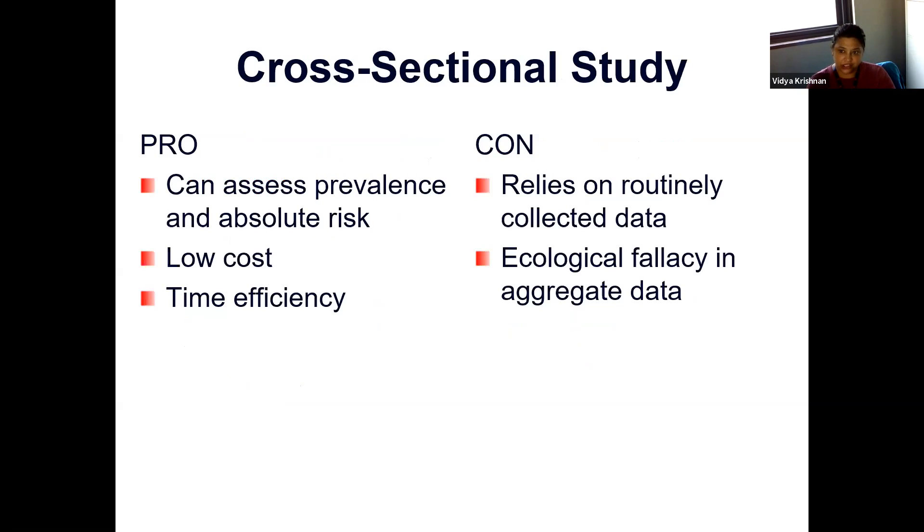Some of the advantages of cross sectional studies is that it's easy, low cost, very time efficient kind of study to do. You'll assess prevalence. You can compare risks of two different groups, patients who are obese versus non obese, for example. The downside is that it relies on routinely collected data. And so you may have run the risk of missing data. And because it is just a single snapshot, you can have this bias of ecological fallacy in aggregate data.